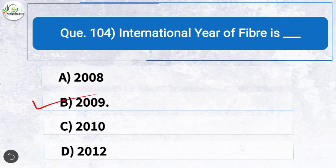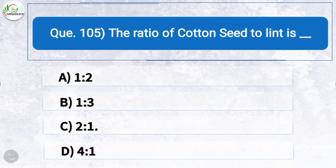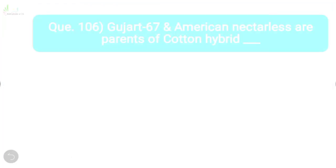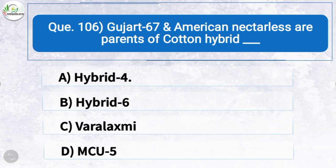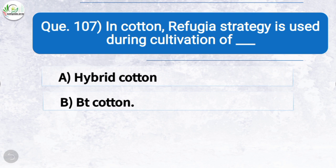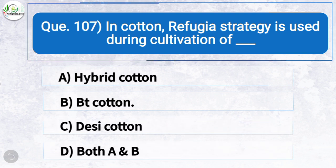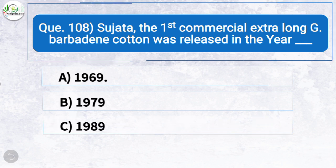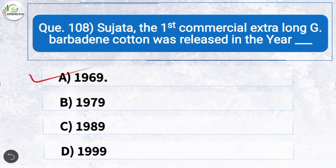Question one hundred and four: International Year of Fiber is — the correct answer is option B: 2009. Question one hundred and five: The ratio of cotton seed to lint is — the correct answer is option C: 2:1. Question one hundred and six: Gujarat 67 and American Nectarless are parents of cotton hybrid — the correct answer is option A: Hybrid 4. Question one hundred and seven: In cotton, refugia strategy is used during cultivation of — the correct answer is option B: BT cotton. Question one hundred and eight: Sujata, the first commercial extra-long Gossypium barbadense cotton, was released in — the correct answer is option A: 1969.